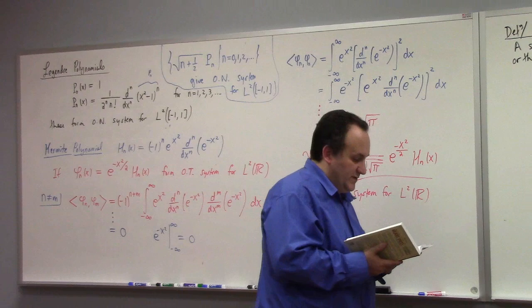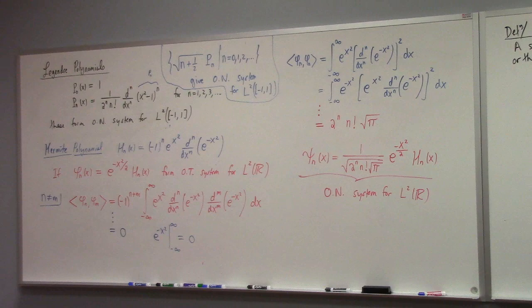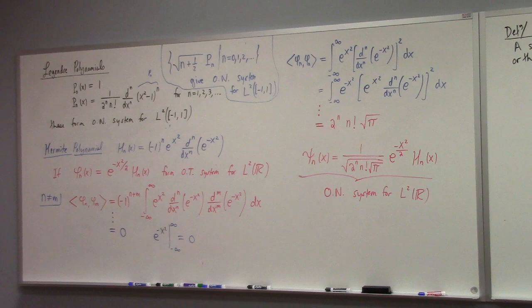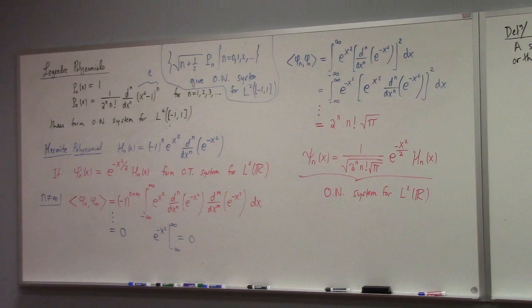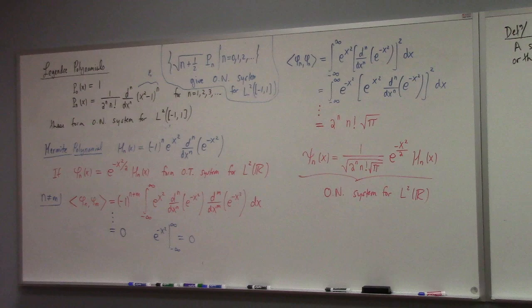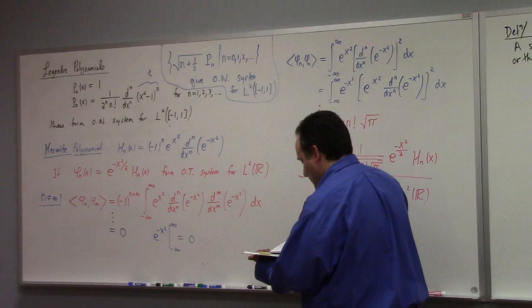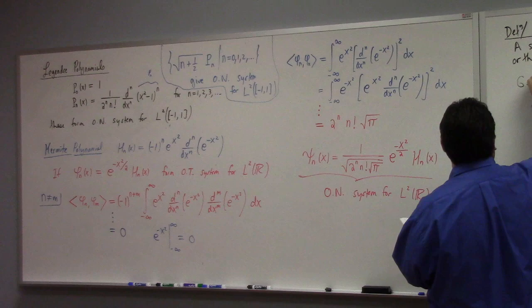So Gram and Schmidt are two different people, apparently. Jorgen Petersen Graham and Erhard Schmidt, hey, I never knew their names before. What do you know? And then he describes the process. And so if you look at the formulas he's writing there, that's exactly the formulas I was doing to the Legendre polynomials. So he's like, here's Gram-Schmidt.